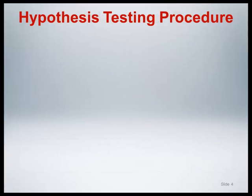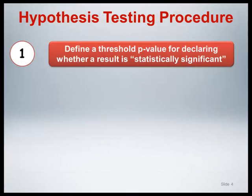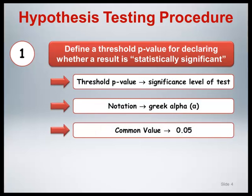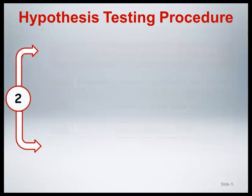Here is how hypothesis testing works. First, define a threshold p-value for declaring whether a result is statistically significant. This threshold value is called the significance level of the test, is traditionally denoted by the Greek letter alpha, and is commonly set to a value of 0.05.